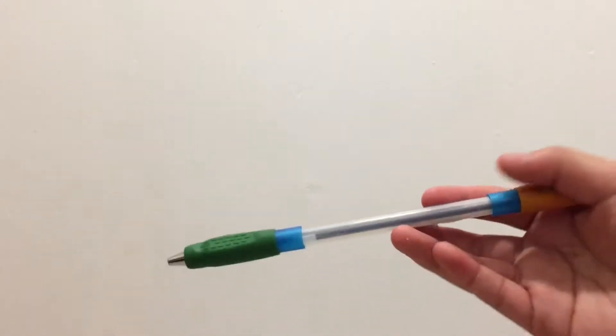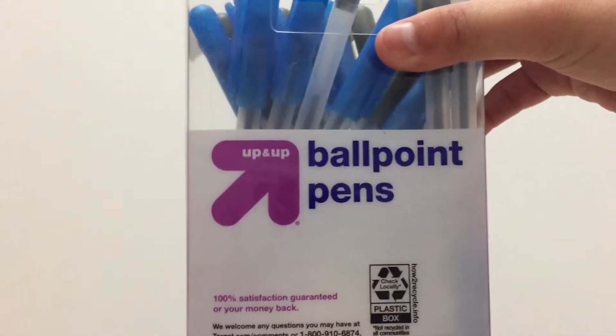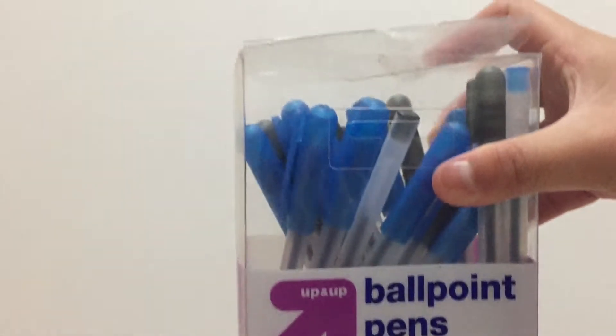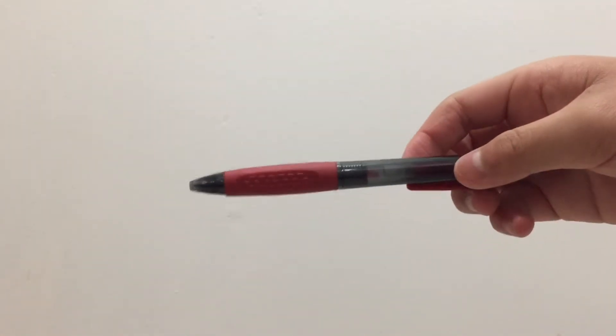What's up everybody, today I'm going to show you how to make a pen spinning mod v2, so let's get right into the video. Materials you're going to need for this project are these Target ballpoint pens that come in a big pack, Wexford colored pens that come in like a pack of 12.